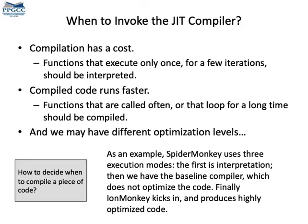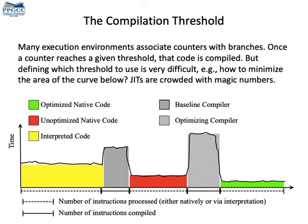Basically, compilation has a cost. If we invoke the JIT, then we need to pay this cost. But the code that's produced runs faster than the code that was interpreted before. The thing is, we usually don't know for how long the program will still be running when we invoke the JIT compiler. Usually, JIT compilers profile programs, and based on profiling information they decide if it's worth compiling or not.